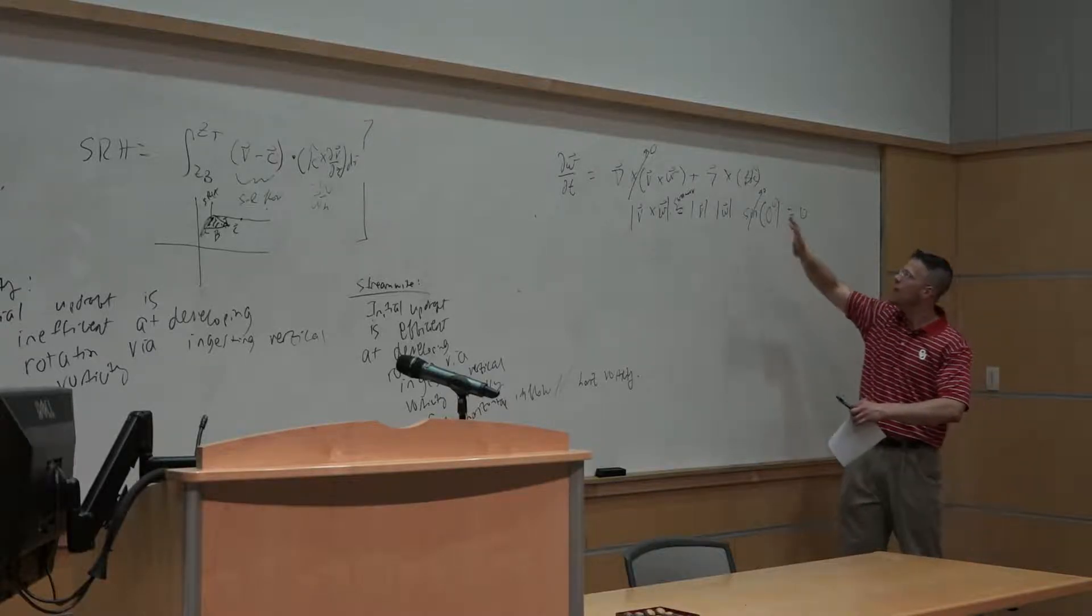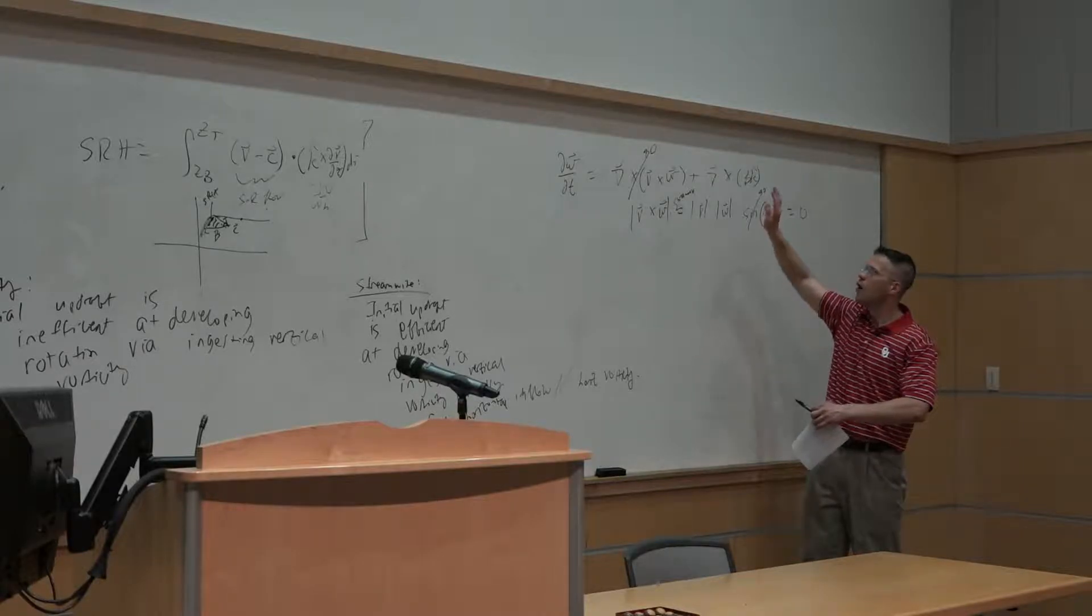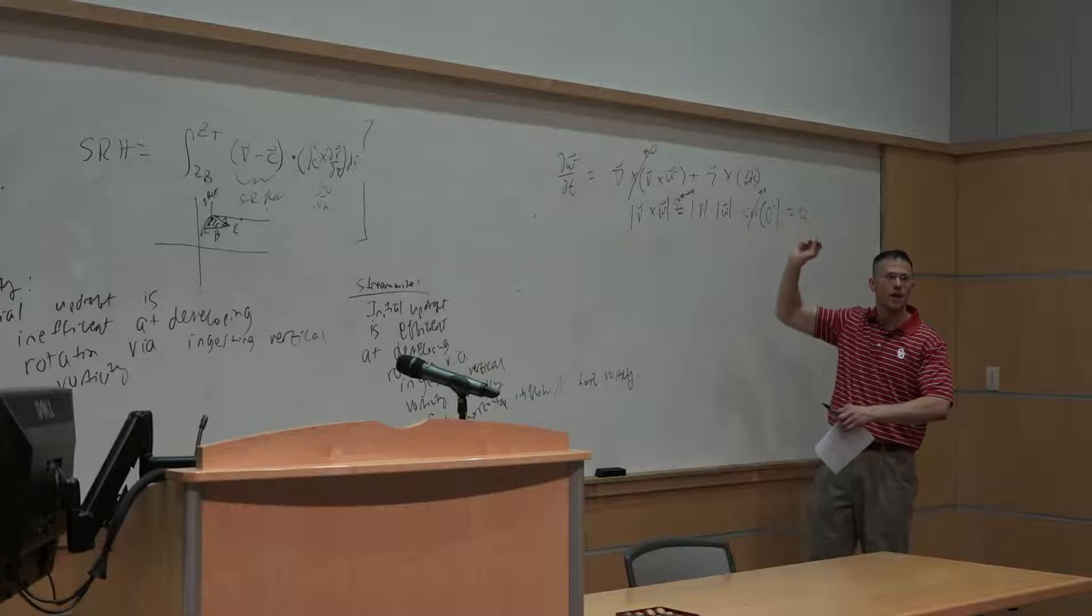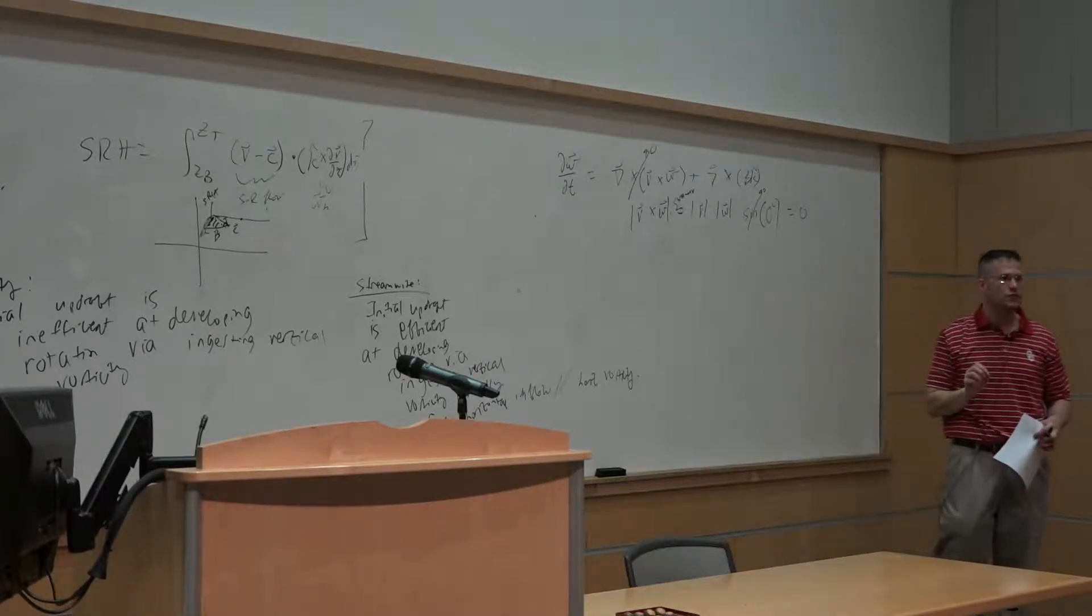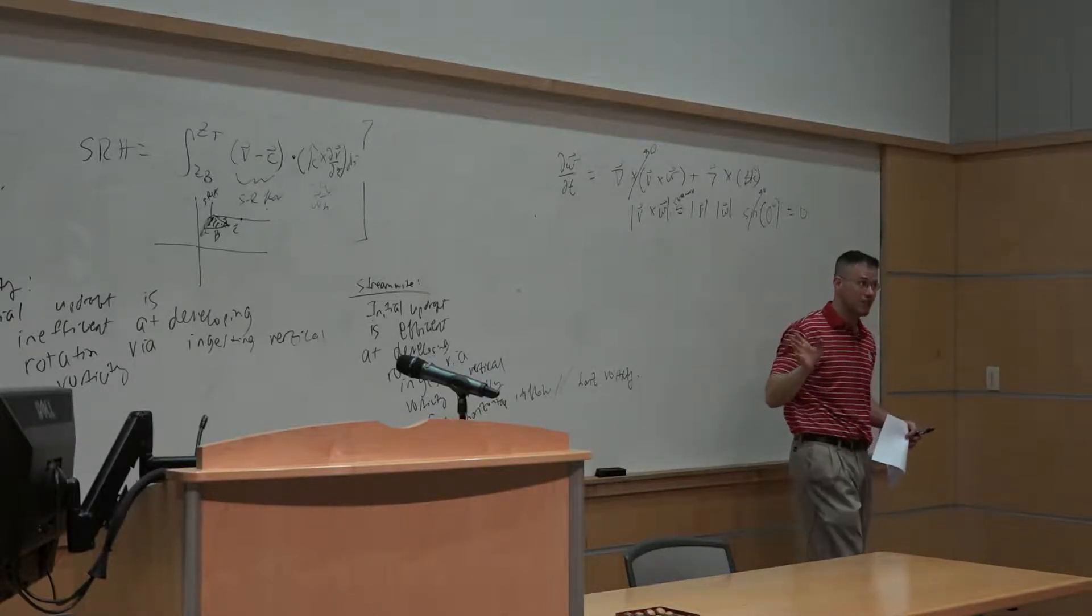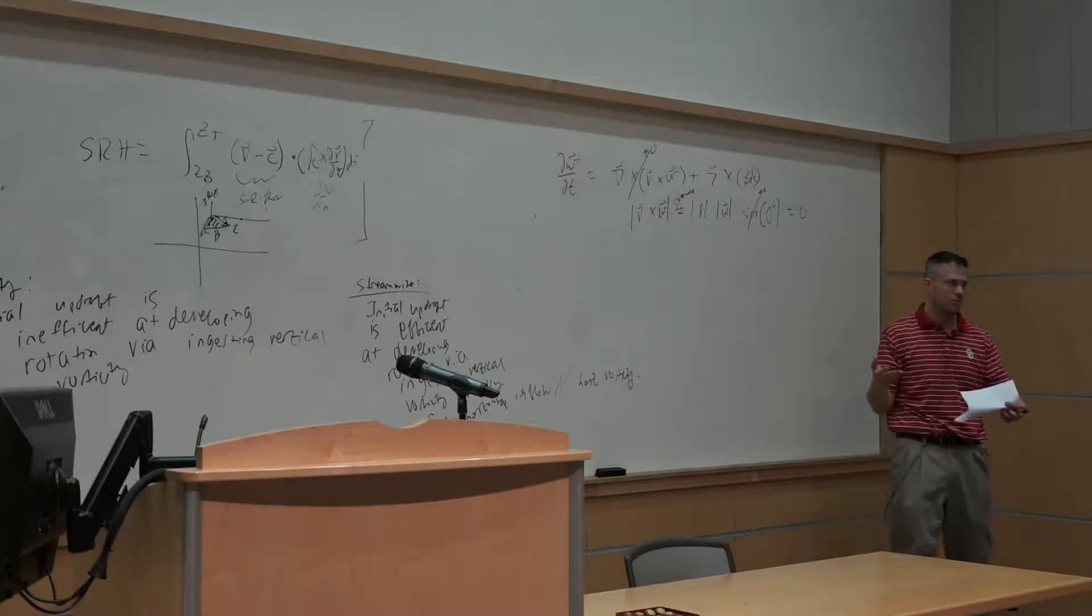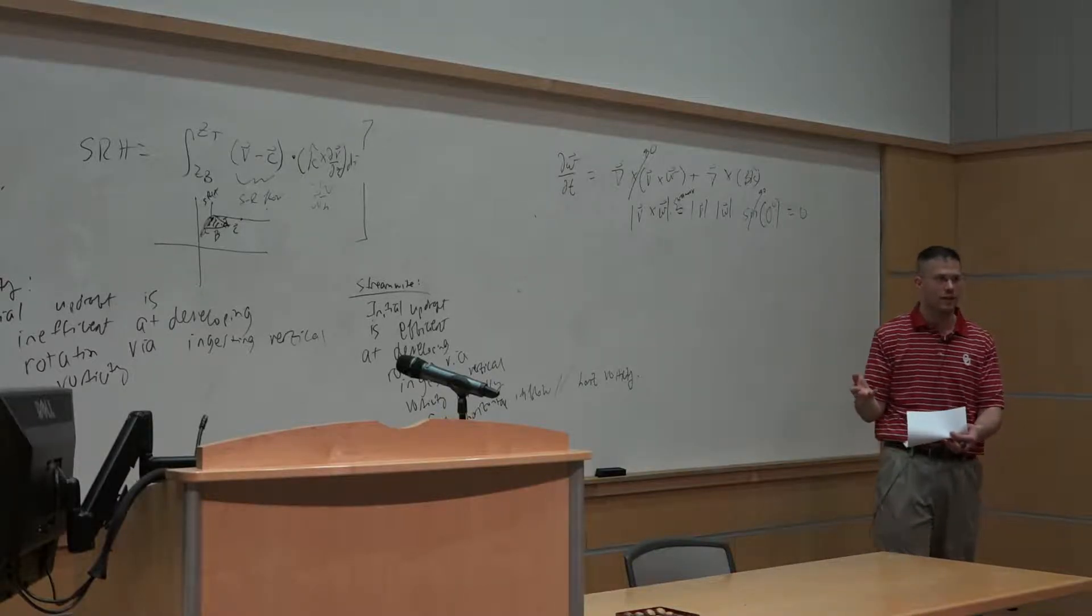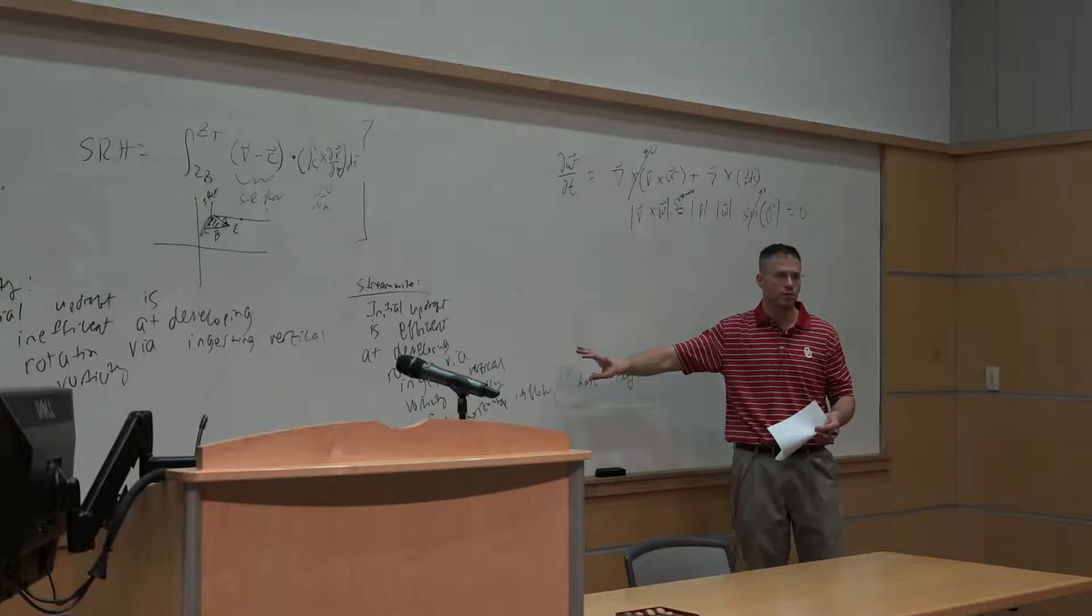And so any change in our vorticity is going to be linked to changes in our spin only about a horizontal axis, implying that our vertical vorticity is going to be conserved in the case of streamwise vorticity. And if our vertical vorticity is conserved, then we can't lose any of it. And assuming that we've gotten some vertical vorticity through various processes in the first place, and we're not losing any of it, streamwise vorticity can be much more efficient at supporting tornado genesis.